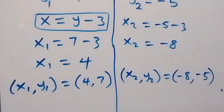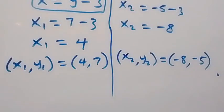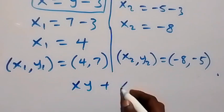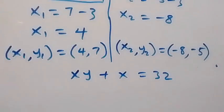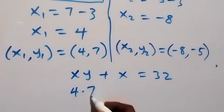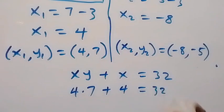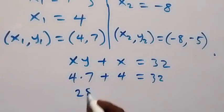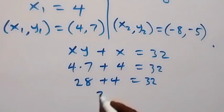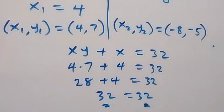We have these two sets of solutions. Let's check with equation 1: xy plus x equals 32. Using the first solution, x is 4 and y is 7: 4 times 7 plus 4 equals 28 plus 4, which equals 32. Left hand side equals right hand side, confirming the first solution satisfies equation 1.